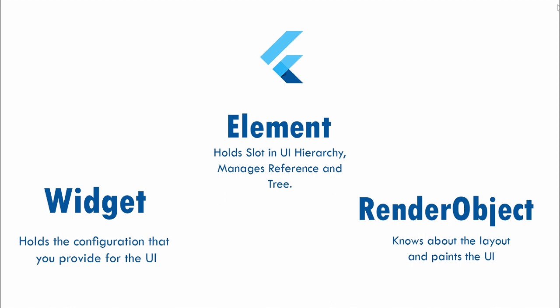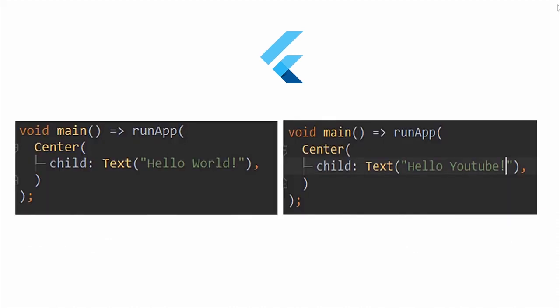Knowing about the definition of widget, element, and render object is not sufficient to know how Flutter manages the UI state and the widgets. So let's take an example in which we have a center widget and a text placed as a child of the center. In the first case, we'll have a hello world, and when the user presses the button, the text is going to change from hello world to hello YouTube. We'll see how Flutter manages this UI change.